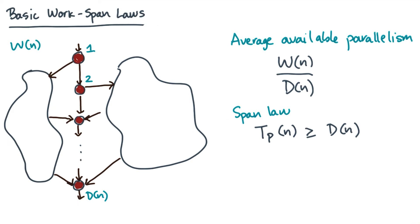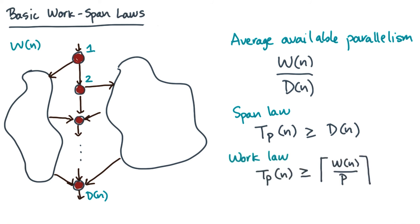Now that's a lower bound in terms of the span, but it's not the only lower bound. Another scenario is just taking all of the work, and if there is no critical path, then I would just divide that work evenly among the p processors. That would give me another lower bound — basically the ceiling of w divided by p. And we'll give that an ominous name as well: the work law.